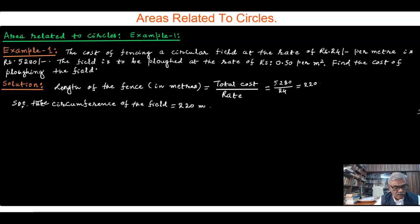Therefore, if R is the radius of the circular field, then 2πR, the circumference, equals 220.